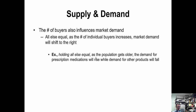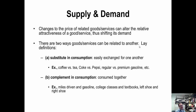The number of buyers clearly influences market demand — if you simply have more people, you're going to have more quantity demanded at any given price. The price of related goods is probably the trickiest factor, because when the price of related goods changes, our quantity demanded for a particular commodity changes as well. When I talk about related goods, I'm really talking about substitutes and complements.